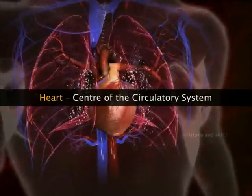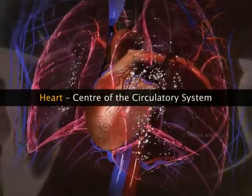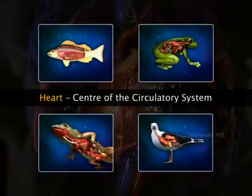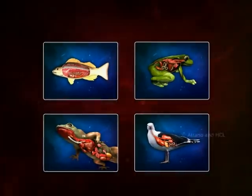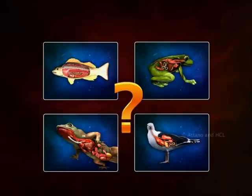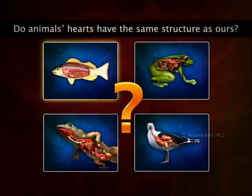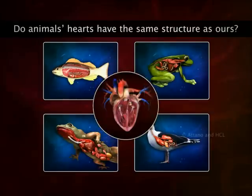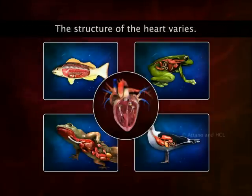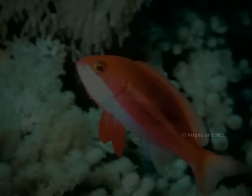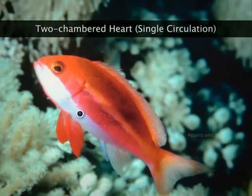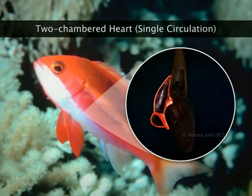The heart is the vital organ of the circulatory system in animals. Is the structure of the heart the same in fishes, amphibians, reptiles, birds, and mammals? No, the structure of the heart varies among the different groups of animals. Fishes have a two-chambered heart.